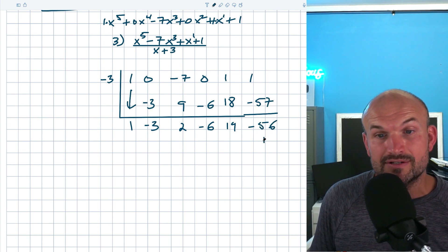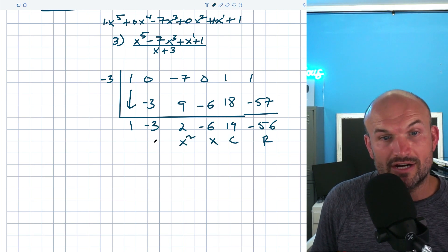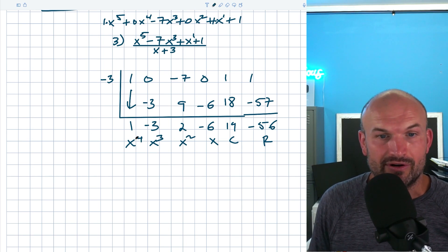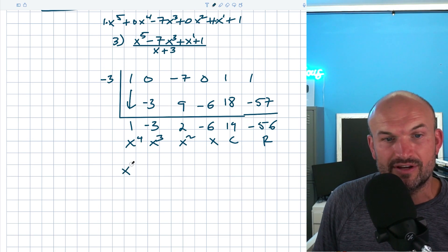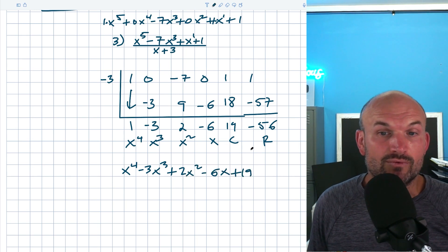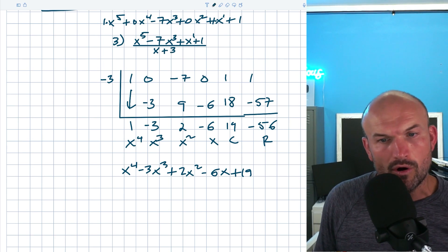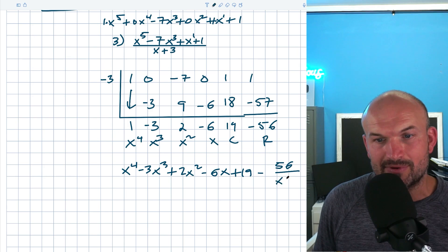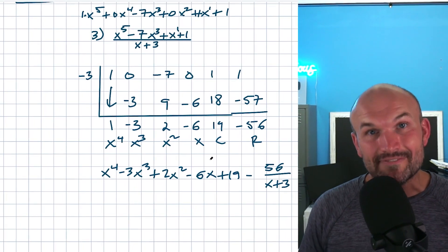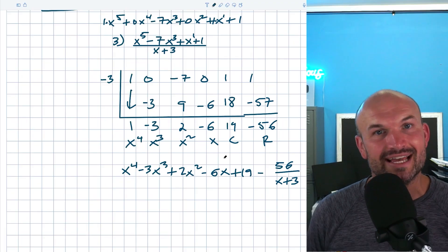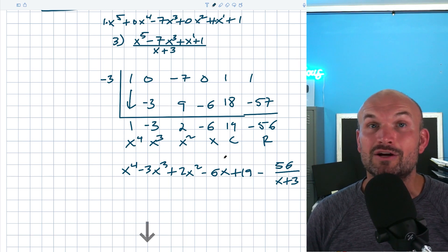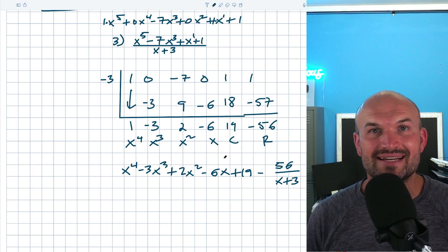The last term is always the remainder. Going from remainder up: constant, linear, quadratic, cubic, quartic. So the quotient is x to the fourth minus three x cubed plus two x squared minus six x plus nineteen, with a remainder of negative fifty-six over x plus three. If you think these three examples were not too bad, check out my next video for more difficult examples using synthetic division. Check out the notes and extra resources in my courses linked in the description below. See you in the next video — cheers!